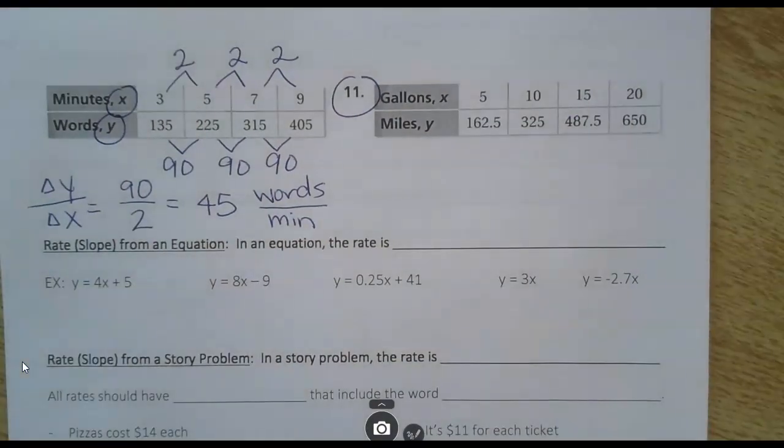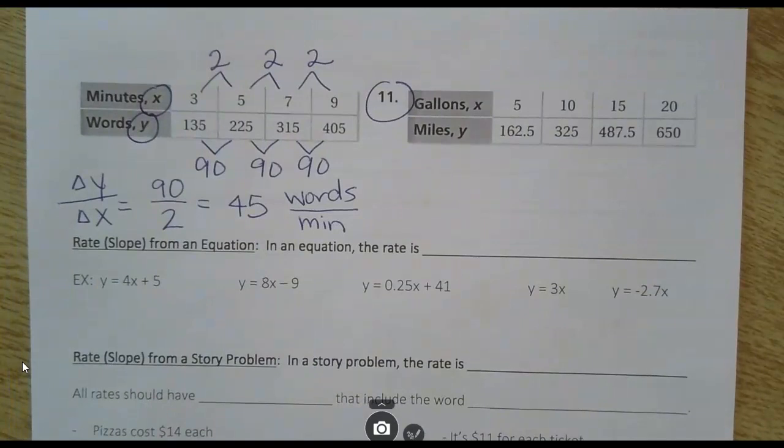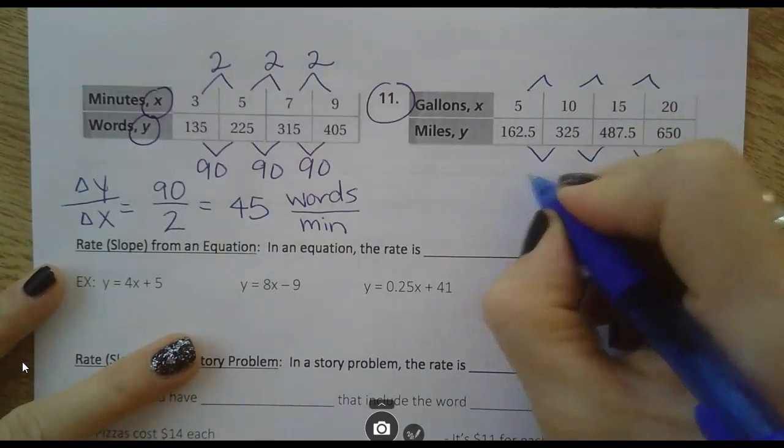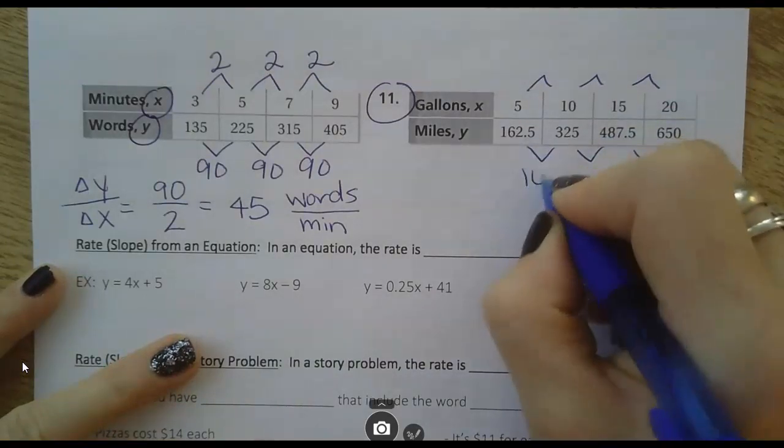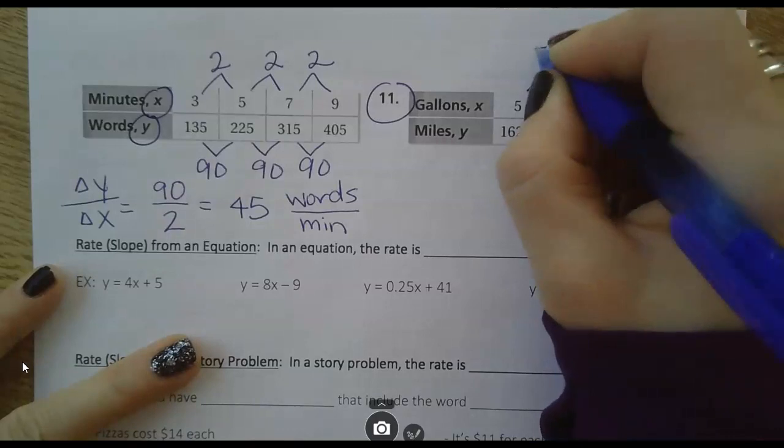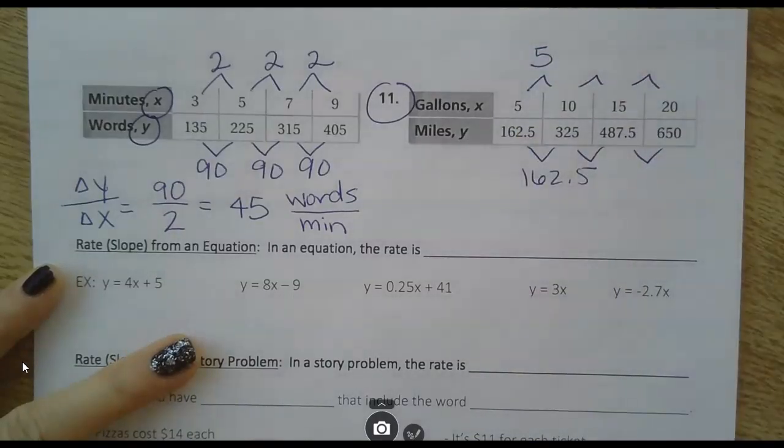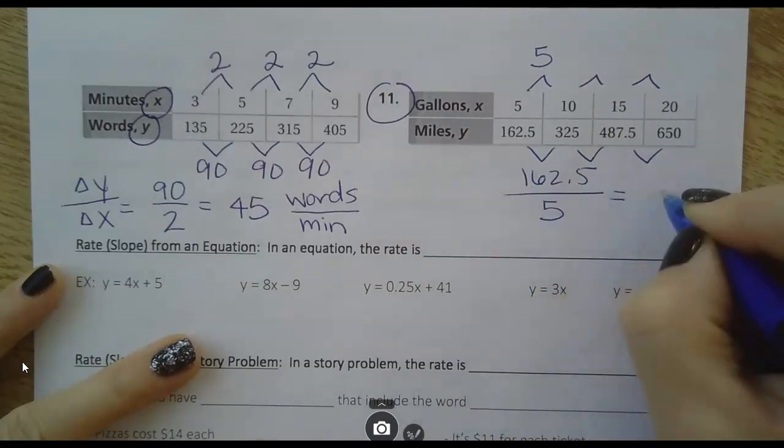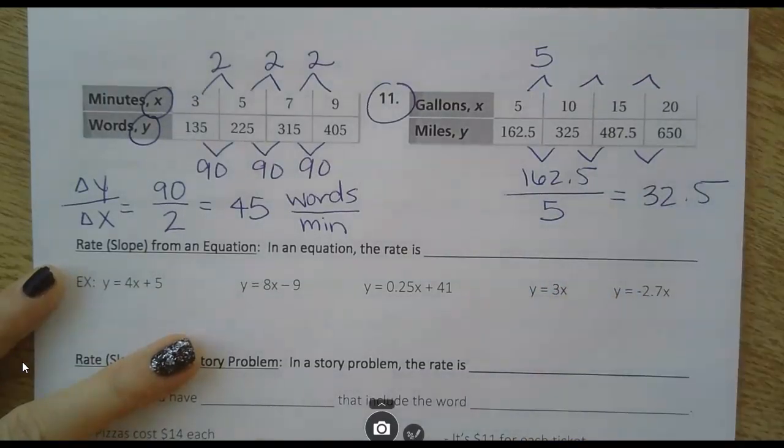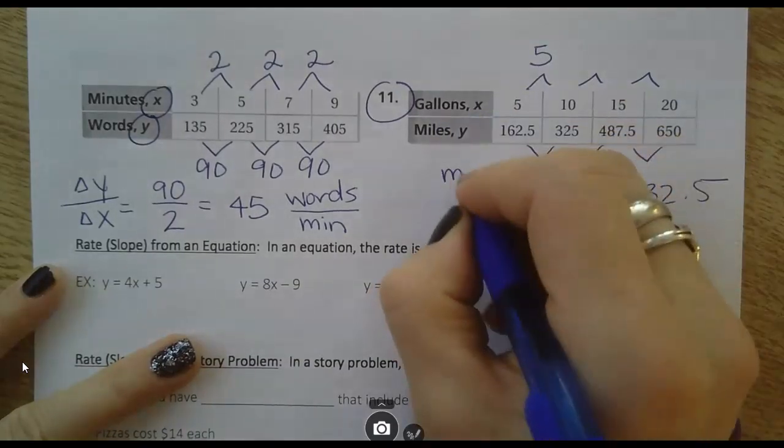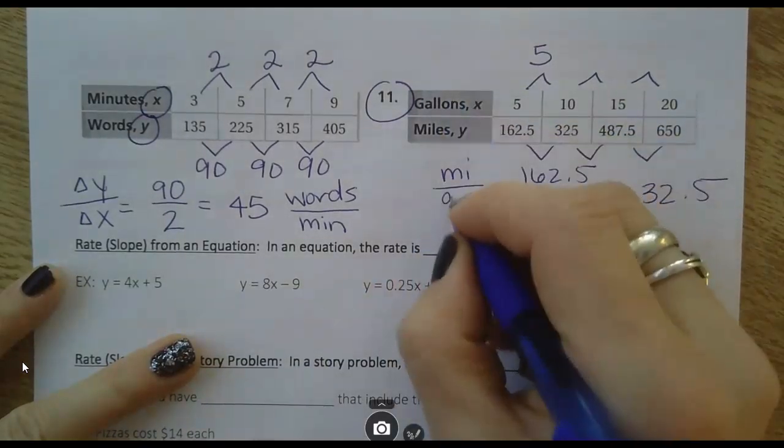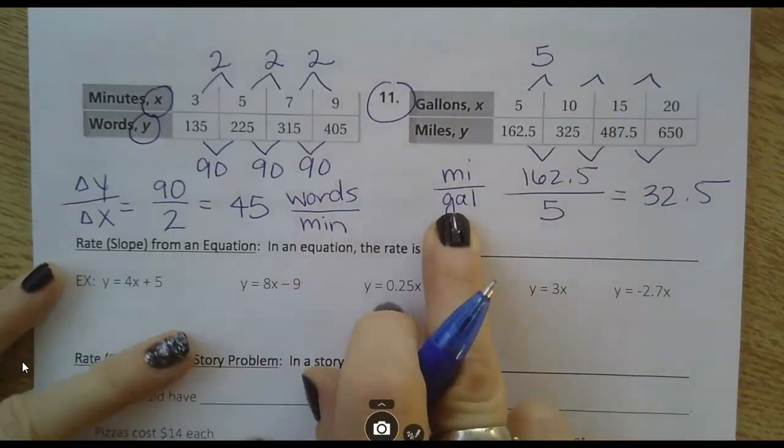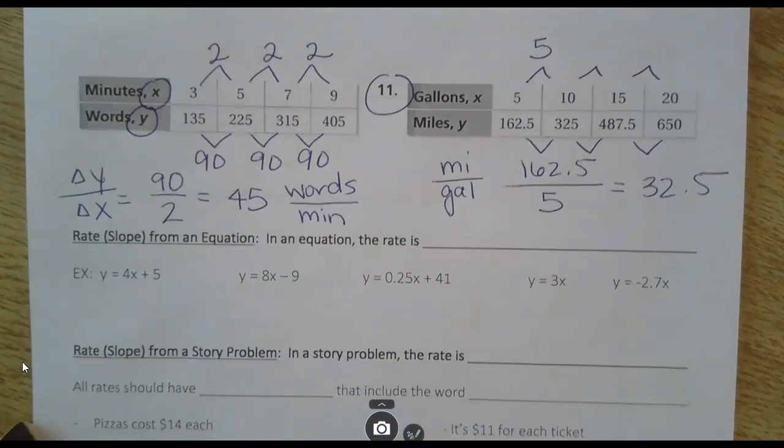Pause and you do number 11. When I did the subtraction here, just to find the difference, I got 162.5. And this was a change of 5 each time. So when I do change in y over change in x, it would come out to 32.5. And then my label would be miles per gallon. Y is on top, gallons x is on the bottom.